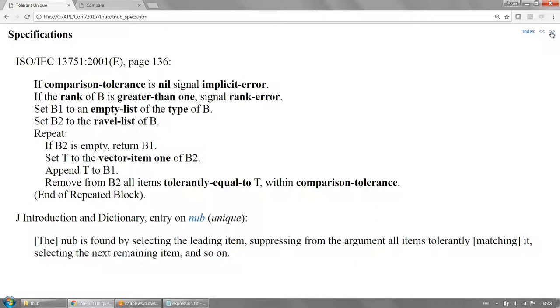Specifications for the unique can be found in two different places: in the ISO standard and in the J dictionary where it's called nub.